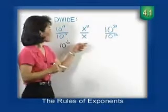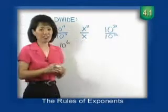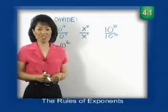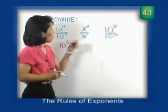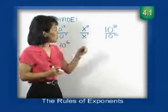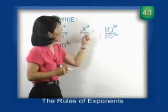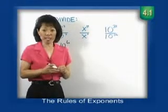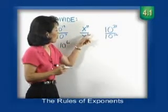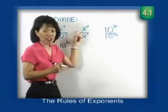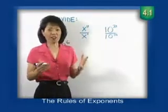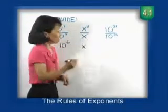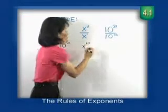Let's try our next problem. We have x to the 11th divided by x. Remember, when there's no exponent showing, we can assume that exponent is 1. This x to the 11th represents 11 x's in the numerator, and x to the first represents 1 x in the denominator. We divide out one x from each, leaving 10 in the numerator: x to the 11th minus 1, giving us x to the tenth power.